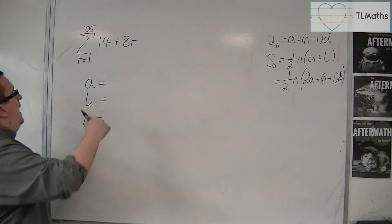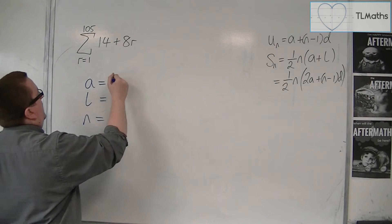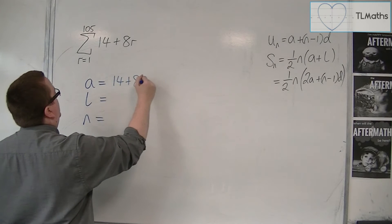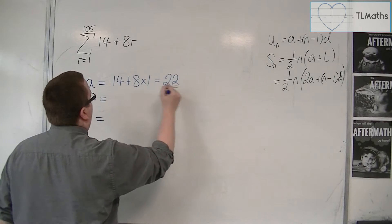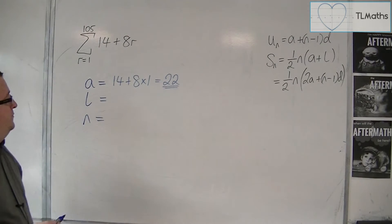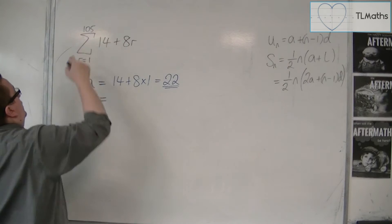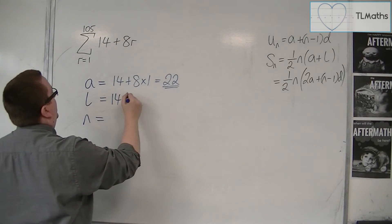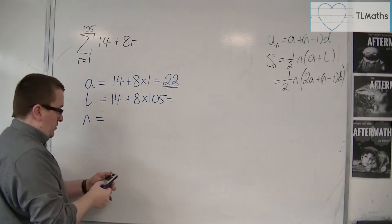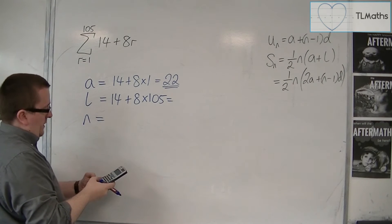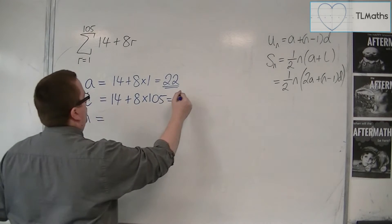A, the first term, is when R is 1. So that's 14 plus 8 times 1, and so that's 22. So the first term is 22. The last term is when R is 105, so 14 plus 8 times 105 is equal to 854.